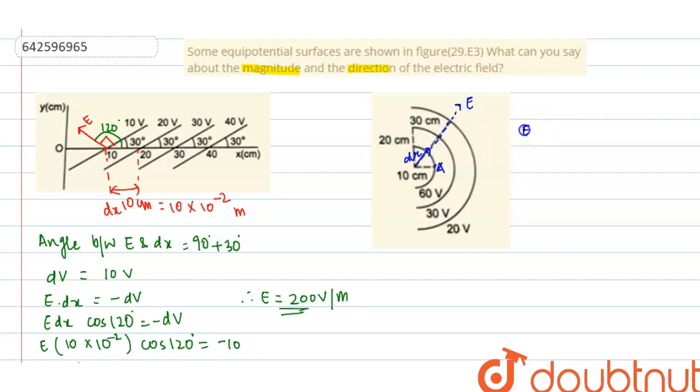Therefore, the angle between E and dr is zero degree, right? So the potential at point A will be V_A, and we know the potential is given by 1 by 4 pi epsilon naught q by r.